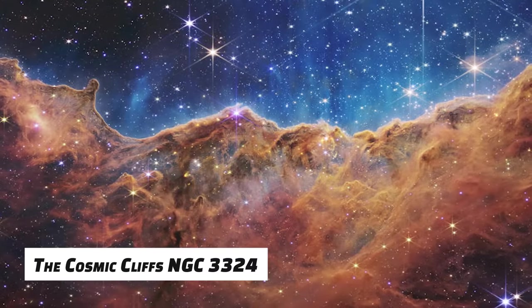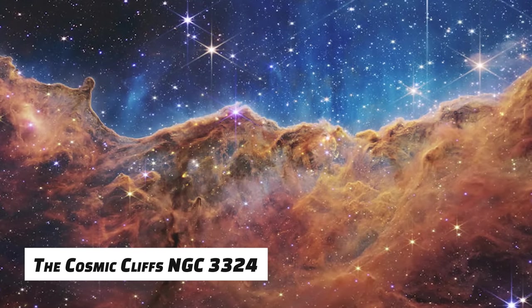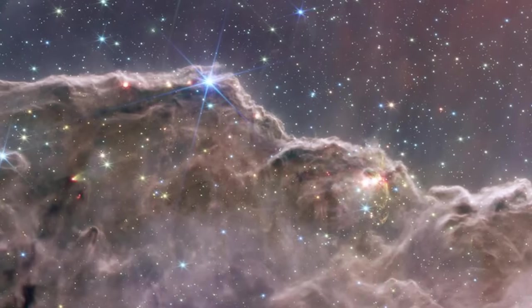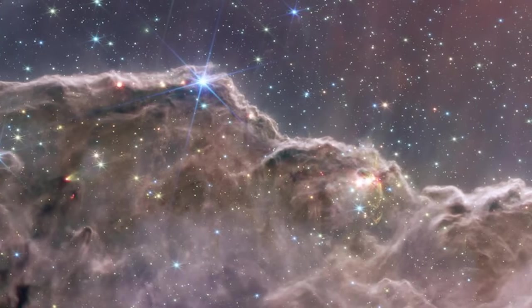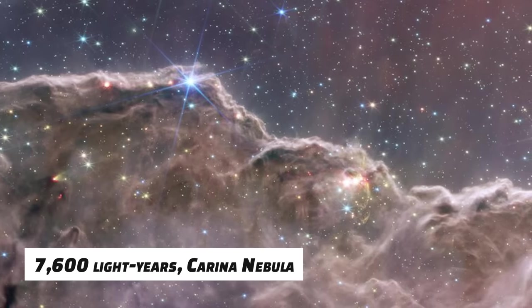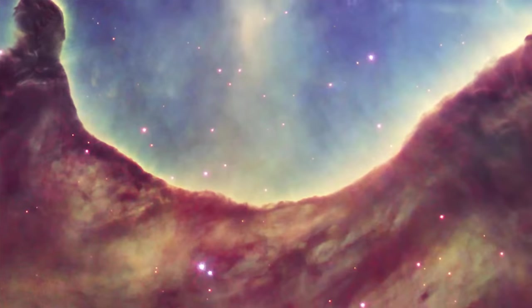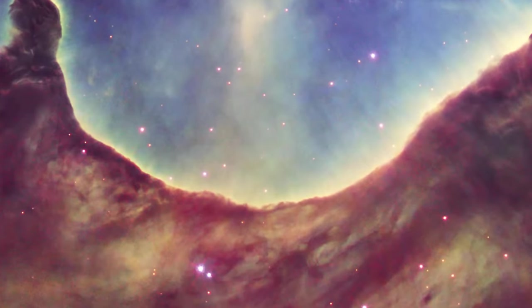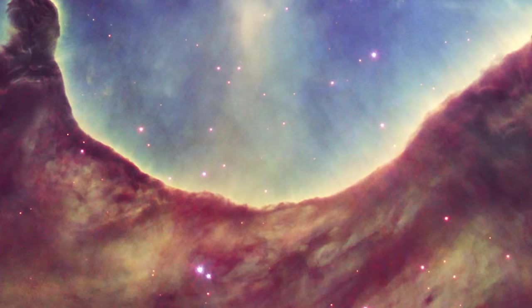The cosmic cliffs, or the margin of NGC 3324, is a star-forming area. This breathtaking picture is located approximately 7,600 light-years away in the Carina Nebula. This image, captured by the James Webb Space Telescope, reveals previously obscured regions of star formation.